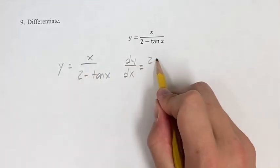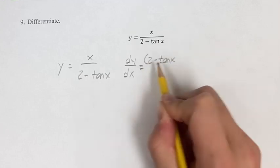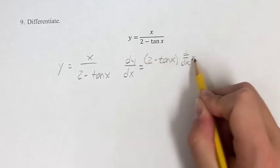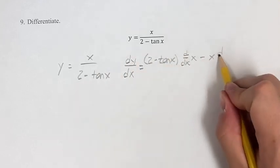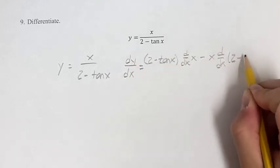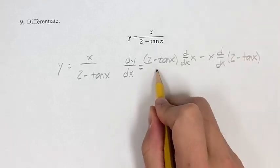denominator 2 minus tangent x times the derivative of the numerator, which is just x, minus the numerator times the derivative of the denominator. This is over the denominator squared.